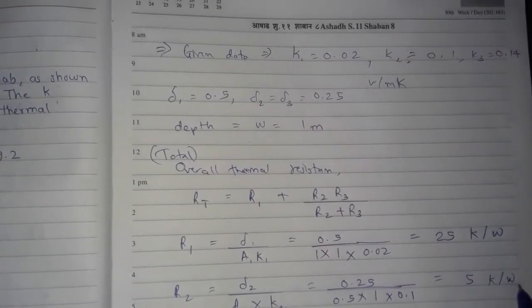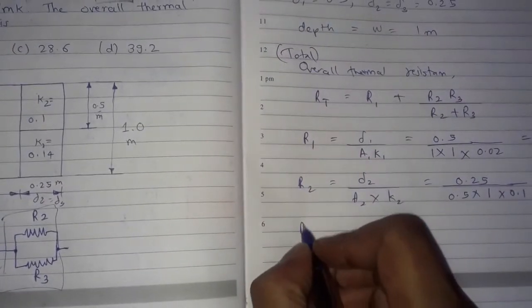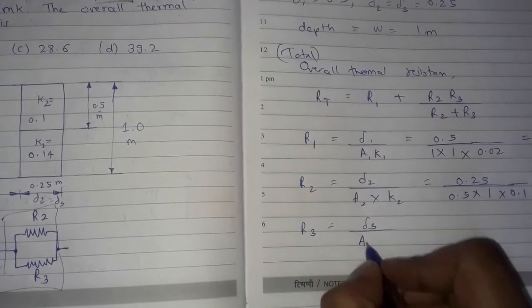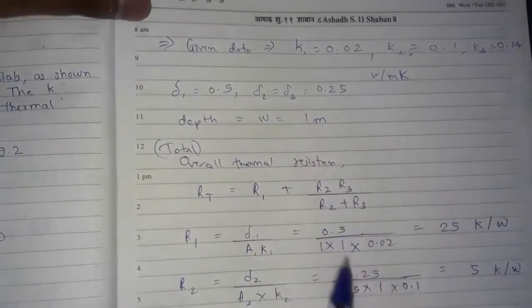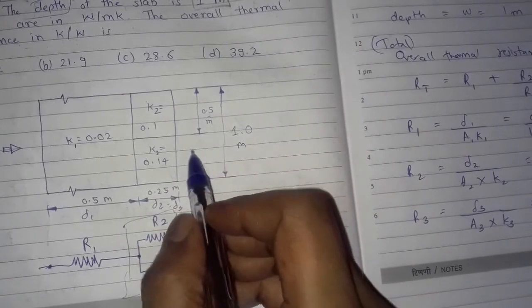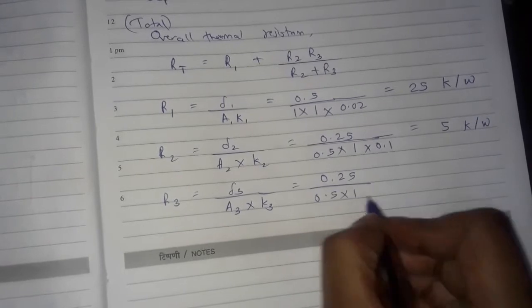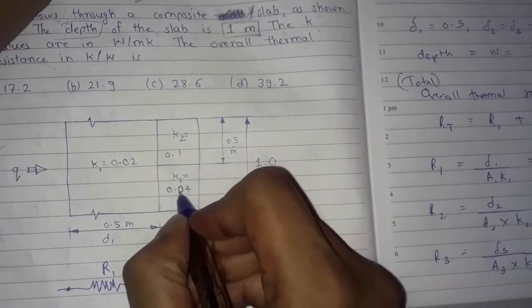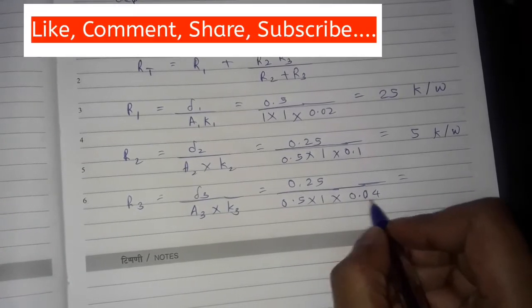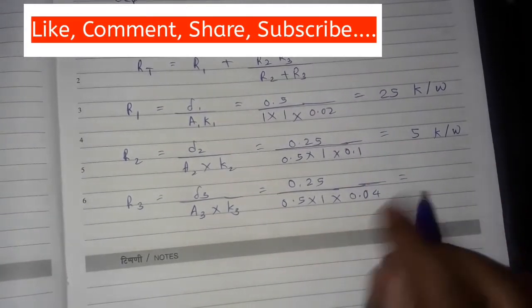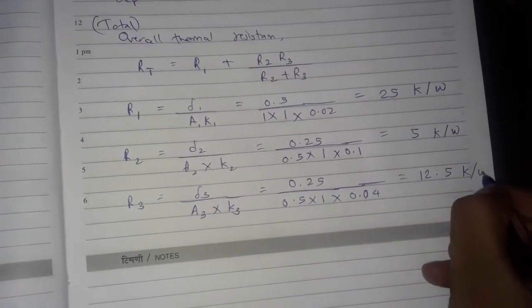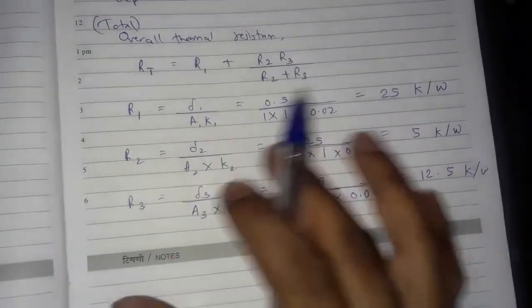Next we find R3, which equals δ3 divided by (A3 × k3). δ3 is 0.25 m. For A3, this side is also 0.5 m and depth is 1 meter, so A3 = 0.5 × 1 = 0.5 m². Note that k3 is actually 0.04 watt per meter kelvin. After calculating, R3 = 0.25 / (0.5 × 1 × 0.04) = 12.5 kelvin per watt.